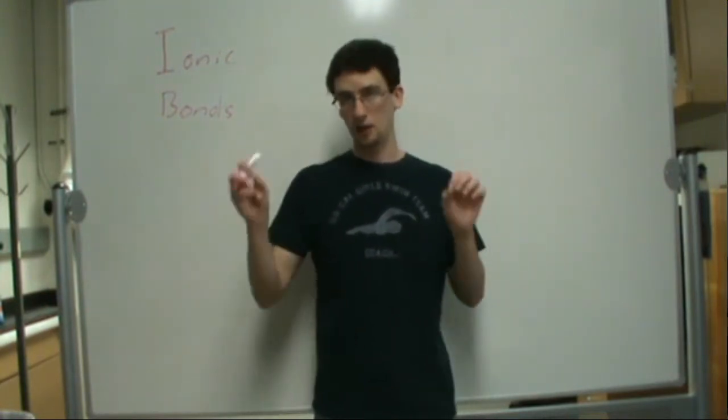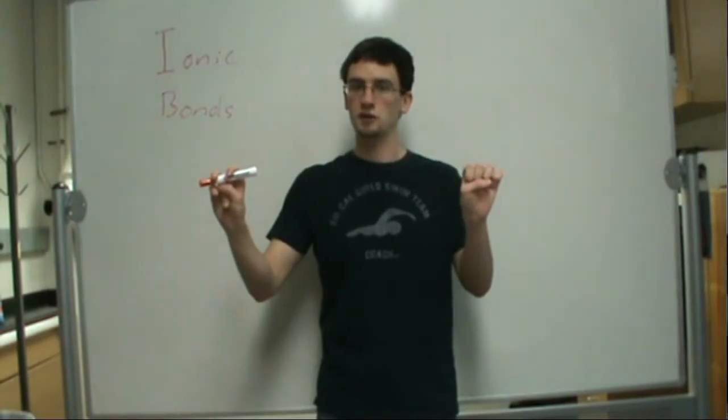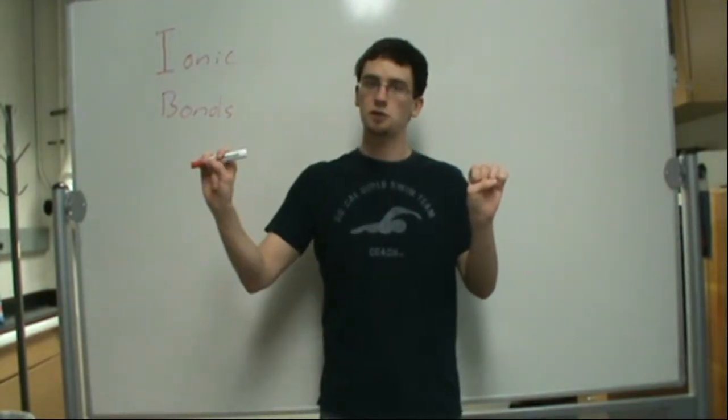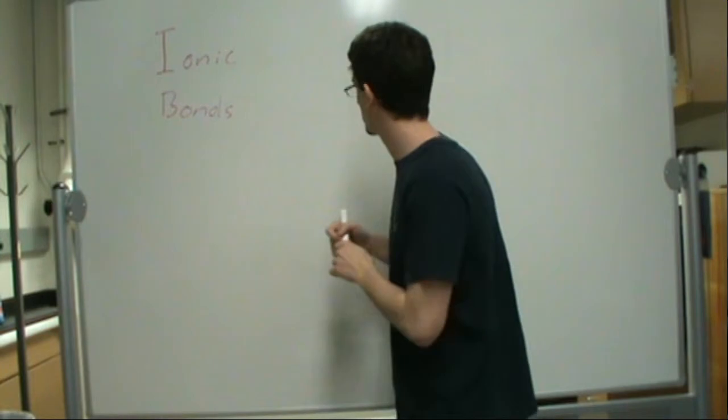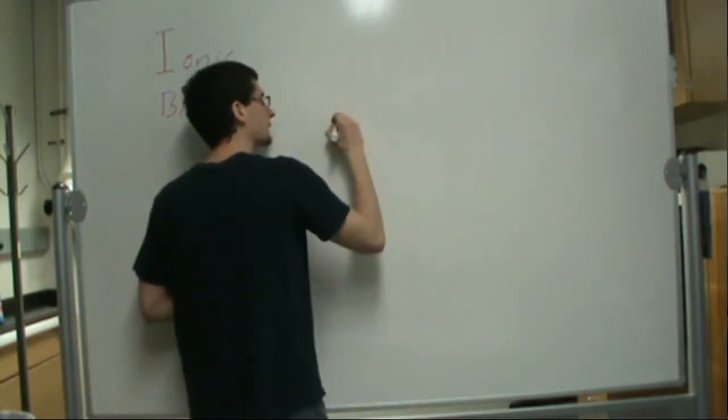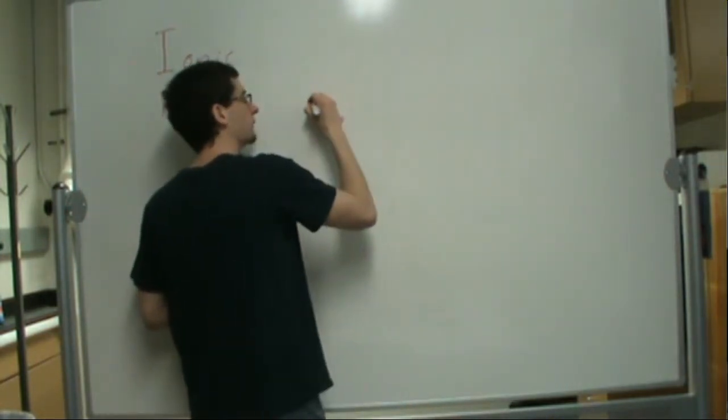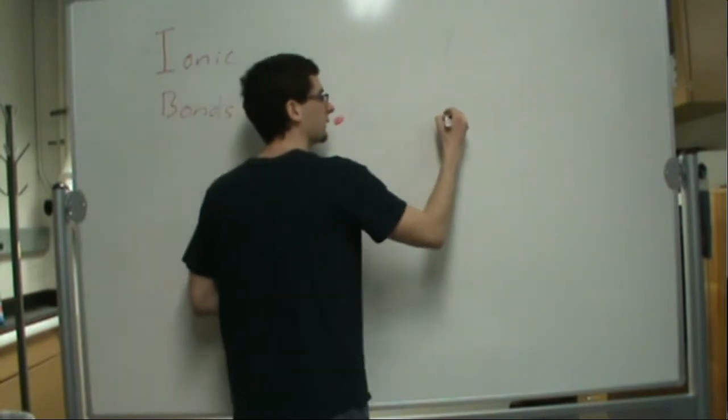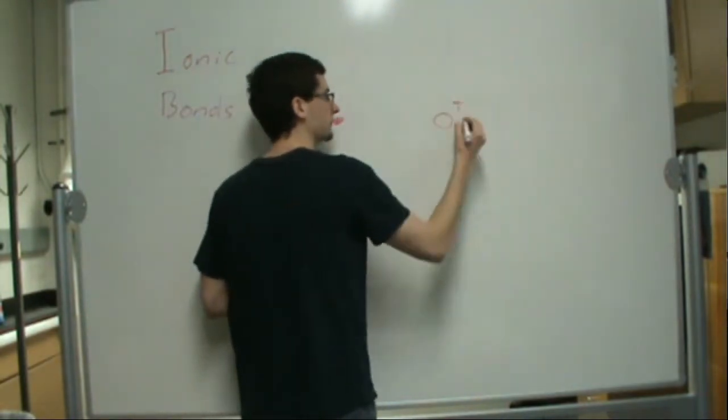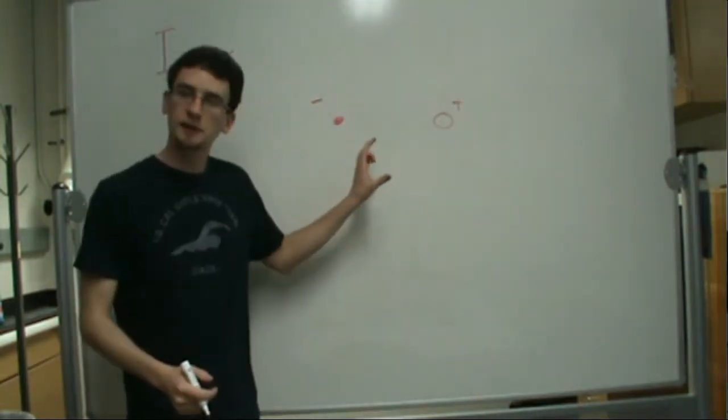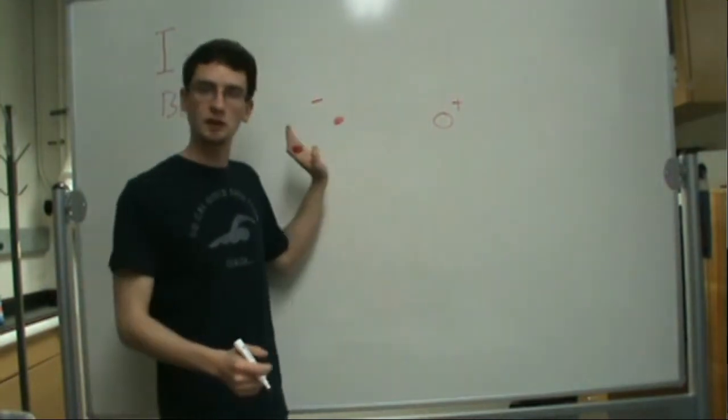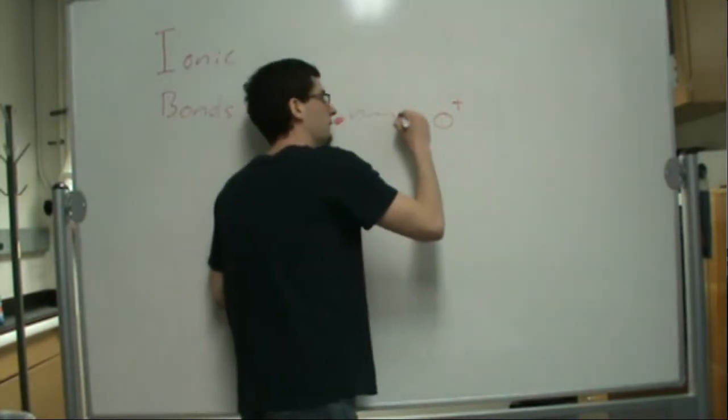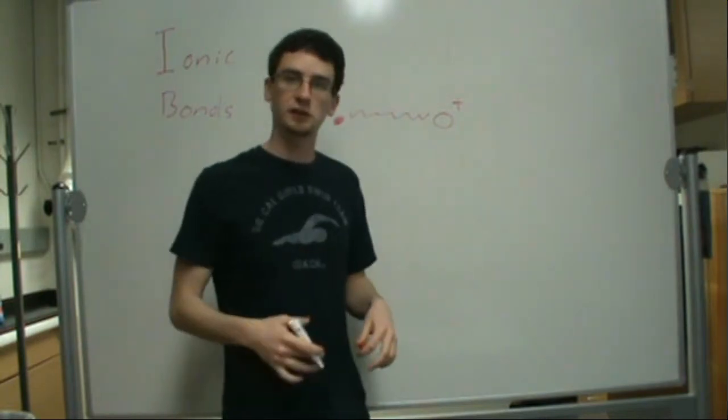What is meant by the term electrostatic is you have something like point charges - you have a positively charged point charge and a negatively charged point charge. Let's call this our negative point charge and then this guy over here our positive point charge. What happens is there's an attraction between the two.